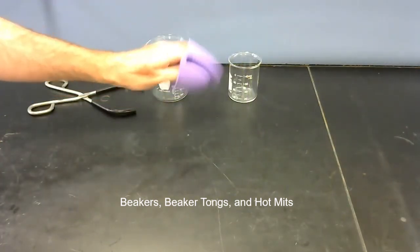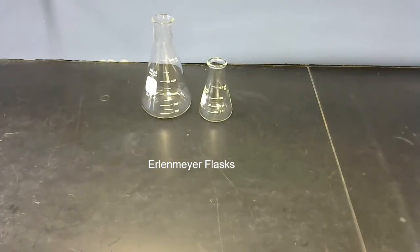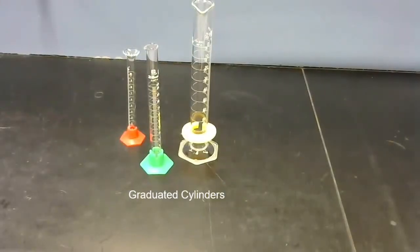These are Erlenmeyer flasks. Similar to the beakers, you can see there's some volume markings on there, but those volume markings should be considered approximate on the beakers and on the Erlenmeyer flasks.